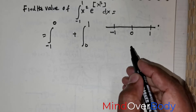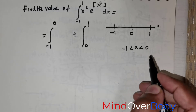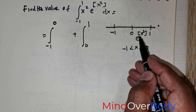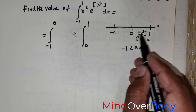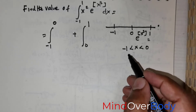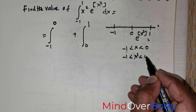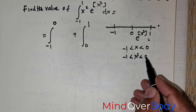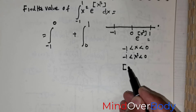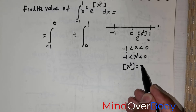In the first interval, x lies between negative 1 and 0. We need to determine the greatest integer of x cubed. If x is in (-1, 0), then x cubed is also in the interval negative 1 to 0. Taking the greatest integer of x cubed gives us negative 1.